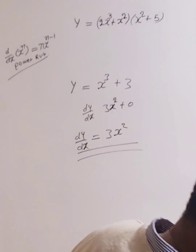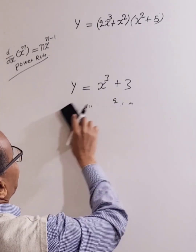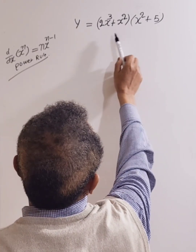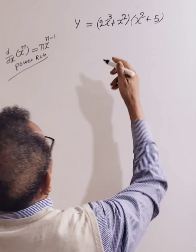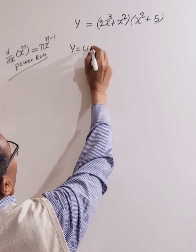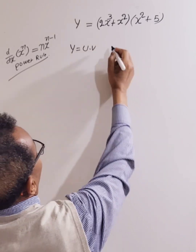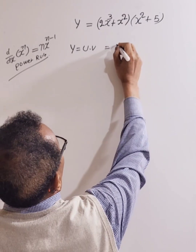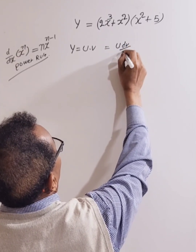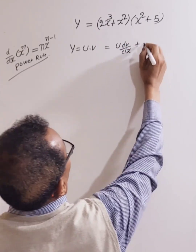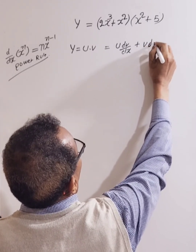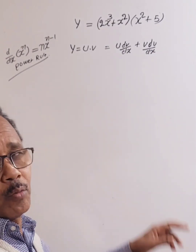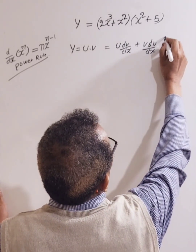Let's go back to the main question now. As you can see, this one involves two functions — it is a product of two functions. So if y is equal to u times v, then dy/dx equals u times the derivative of v, plus v times the derivative of u. This is the product rule, and we need to apply it here.